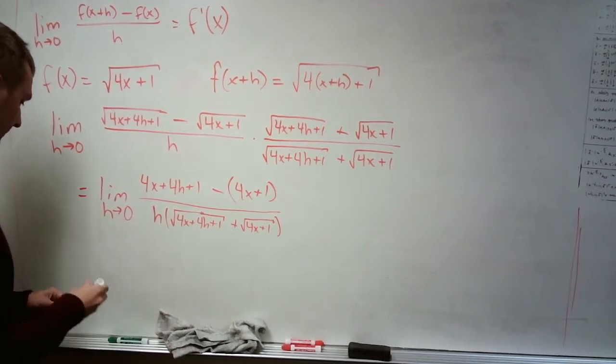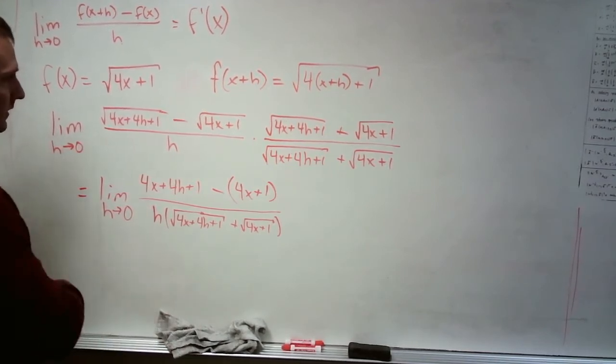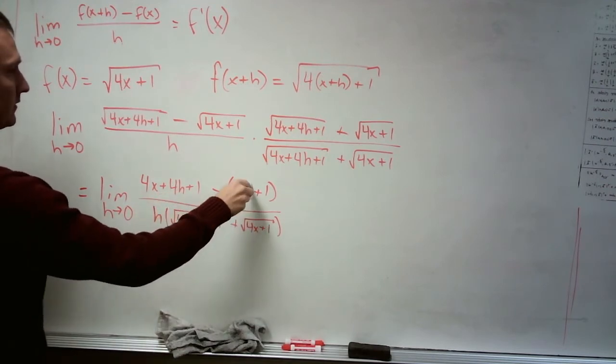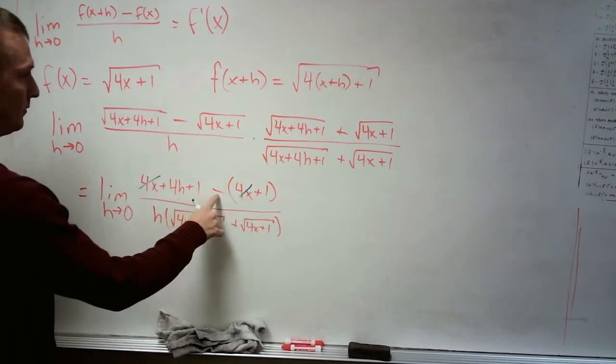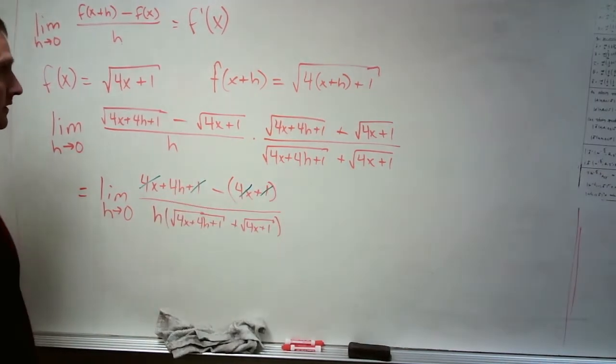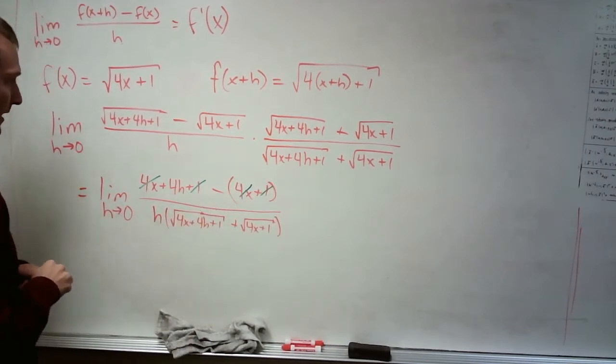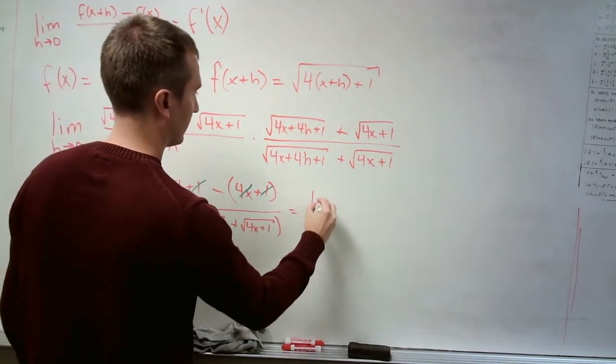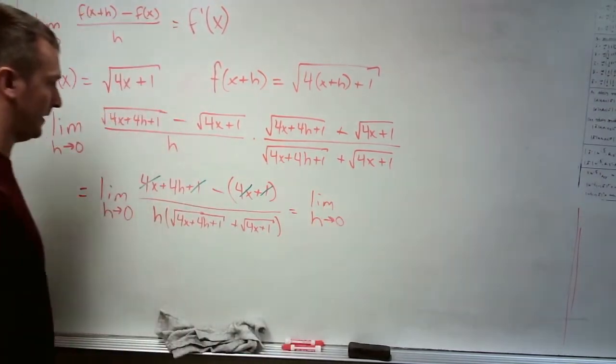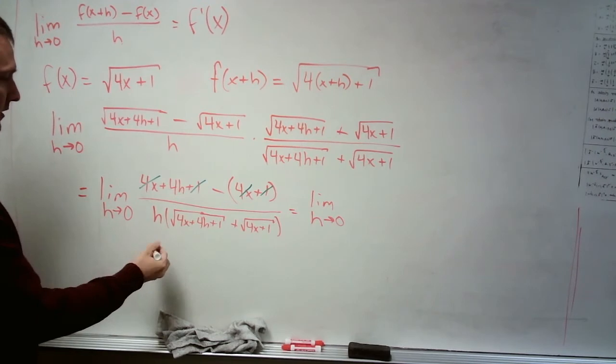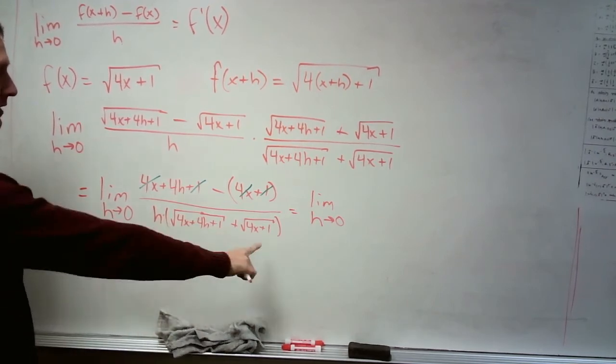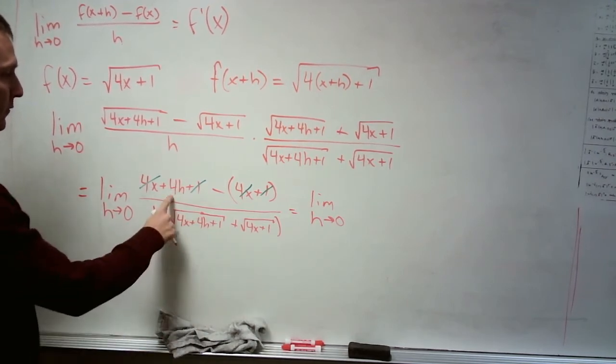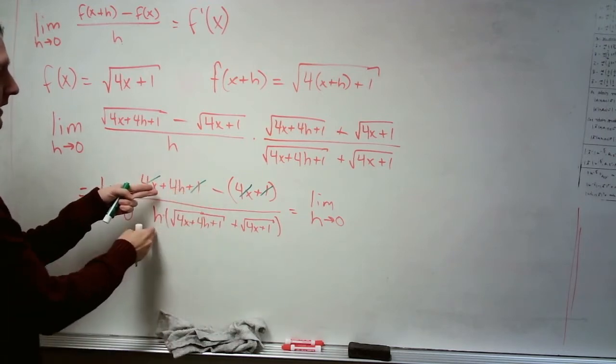On top, we have some really nice cancellations that take place here. We've got a 4x minus a 4x, so those are gone. And fortunately for me, I don't have anything left over here. So I cannot forget this negative sign like I did last time. So we have just 4h on top. But we also have something else on bottom. We've got a factor of h here. So we've got h times something on bottom, and we've got 4 times h on top, which means that this leftover h can cancel with this h.